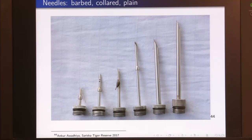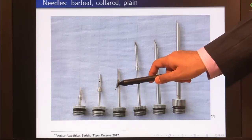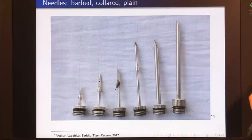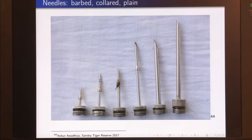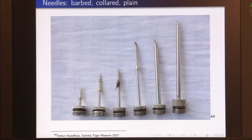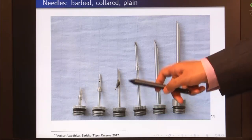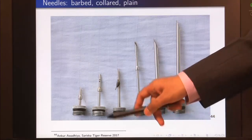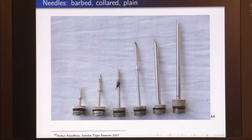Barbed needles have a small backward projection — once inserted, the needle will not come out until surgically removed. These are used when the dart must remain on the body until the animal is retrieved. For chemically immobilizing an elephant, a barbed dart can carry a VHF transmitter, allowing veterinarians to use a VHF antenna and receiver to home in on the animal and find it quickly.